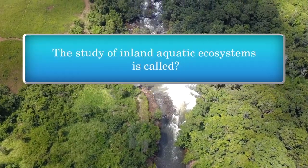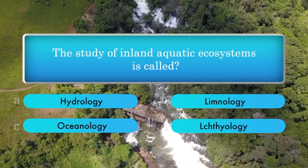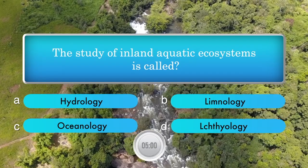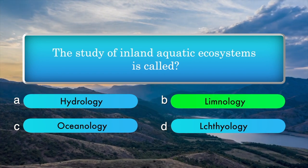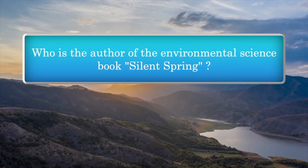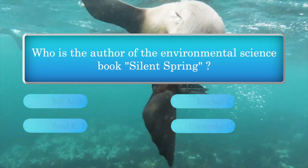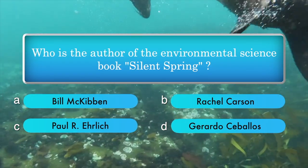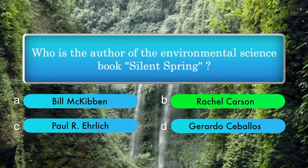The study of inland aquatic ecosystems is called — options: hydrology, limnology, oceanology, histology. Answer is limnology. Who is the author of the environmental science book Silent Spring? Options: Bill McKibben, Rachel Carson, Paul R. Ehrlich, Carlos Saavedra. Answer is Rachel Carson.